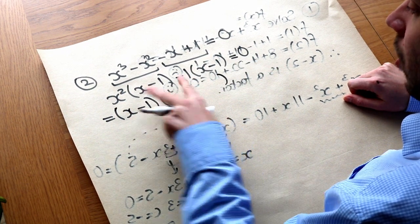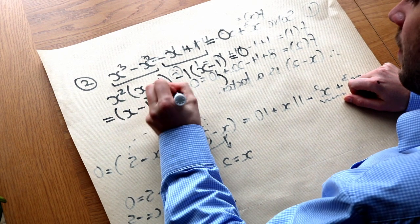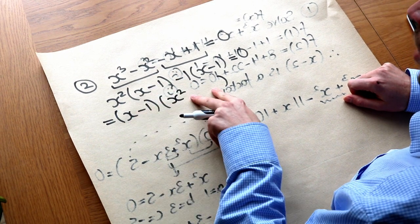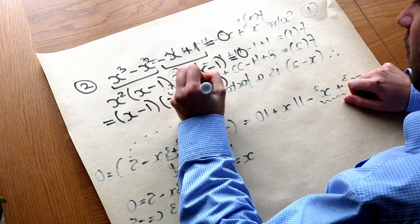Now x minus one times what is x squared x minus one, or it's x squared. And x minus one times what is minus one x minus one, or it's minus one.